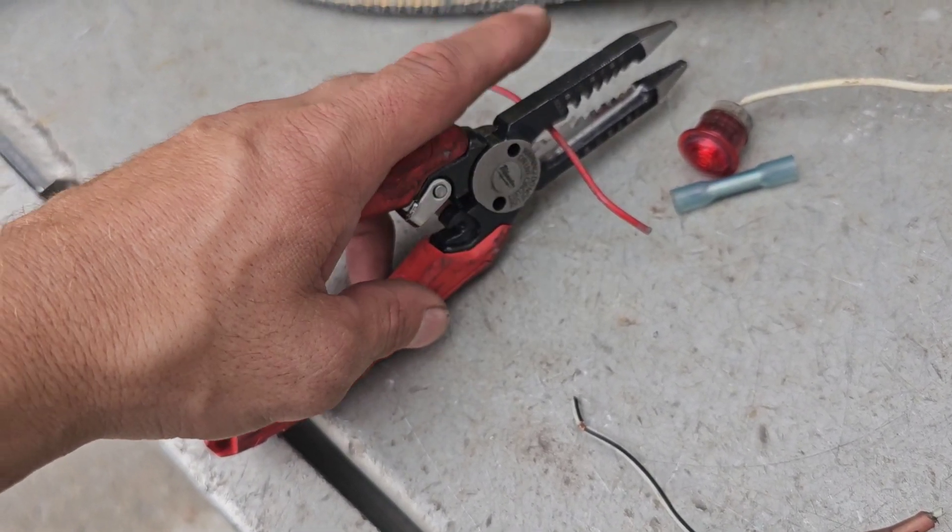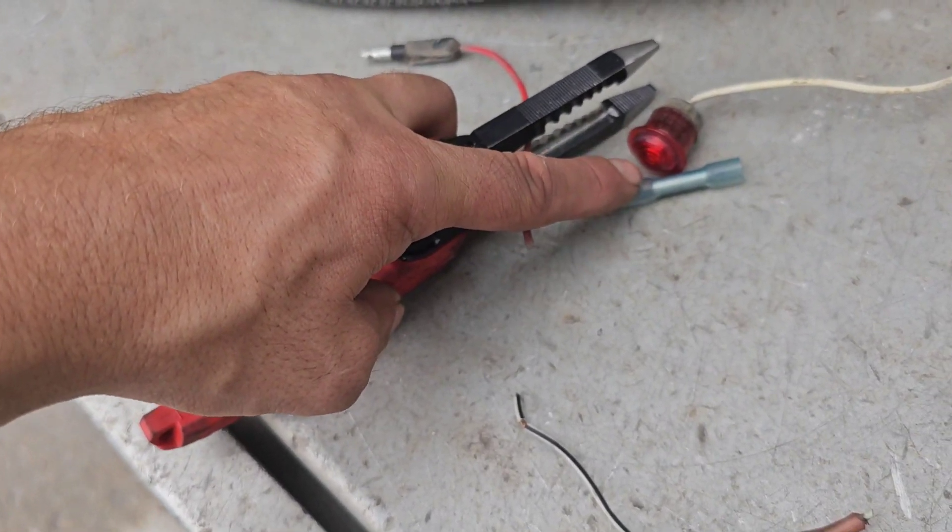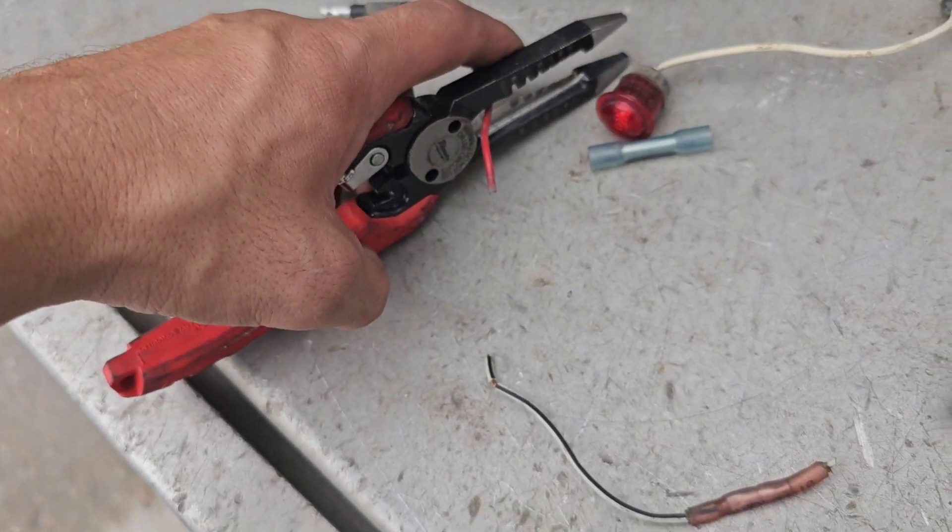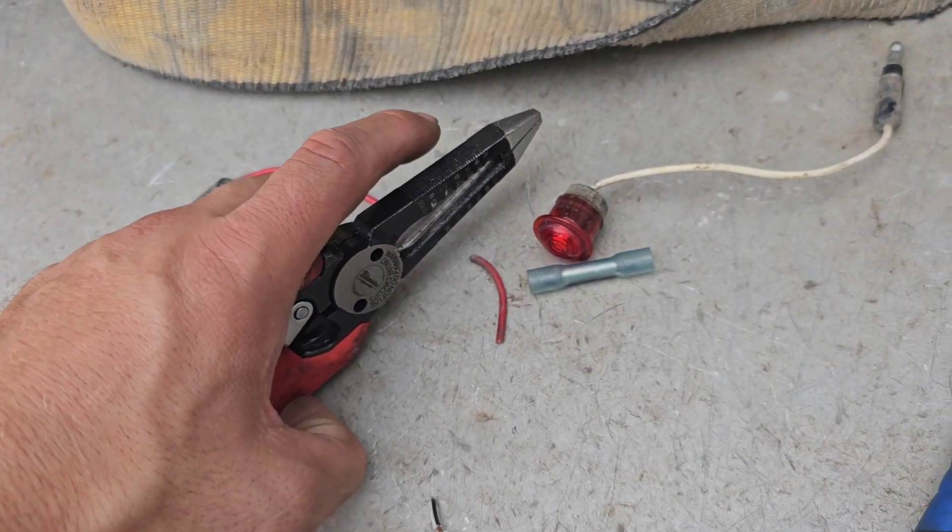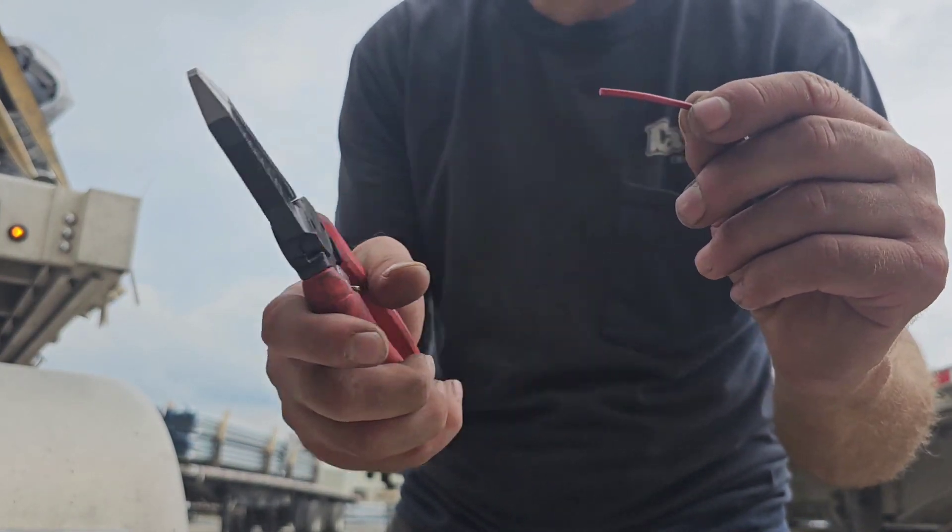Then strip it, but leave about an inch on each side before the cover on the buck connector to cover up. And then what we're gonna do is strip this wire and expose a little bit of wire.